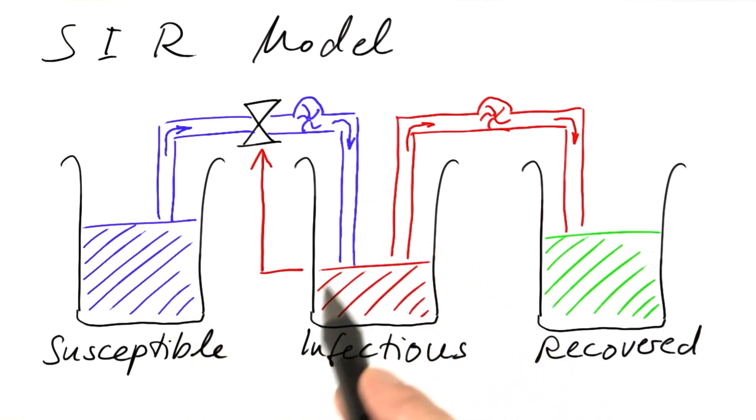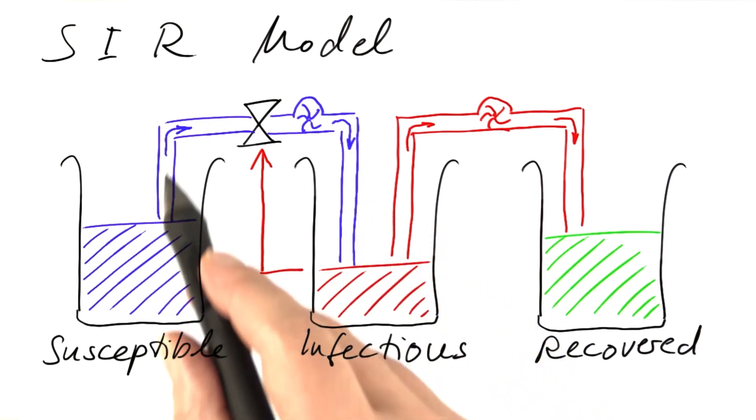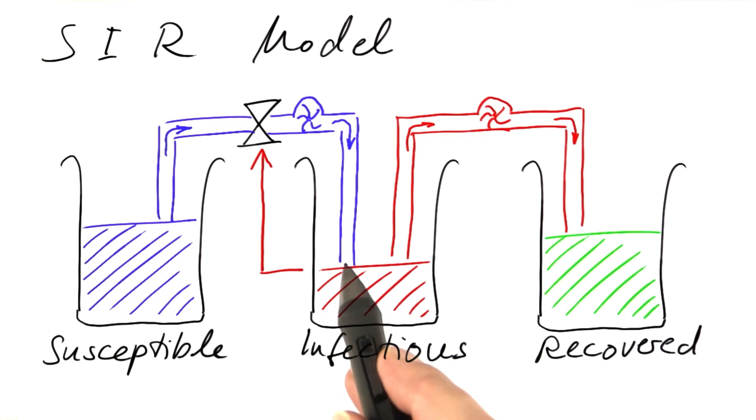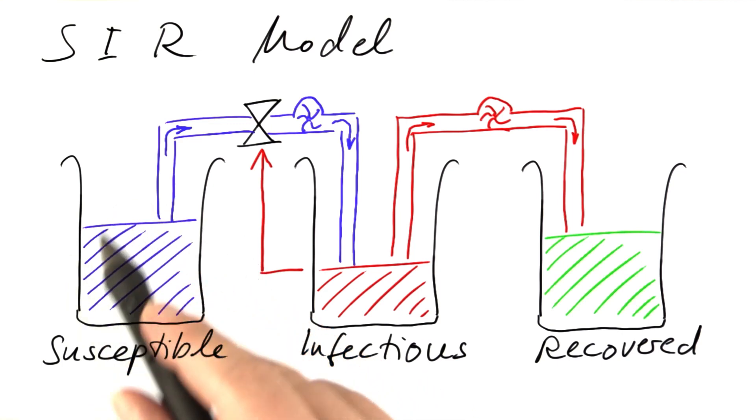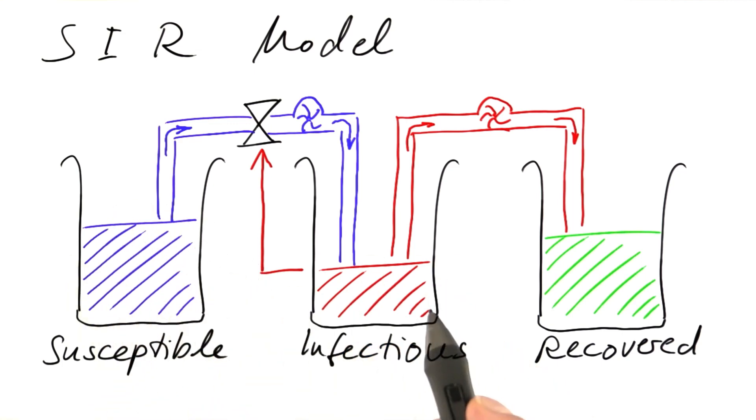Susceptible persons can get infected and then become infectious. The rate of that process is controlled by the number of infectious people. The more infectious people there are, the larger the probability is that a susceptible person meets an infectious person.